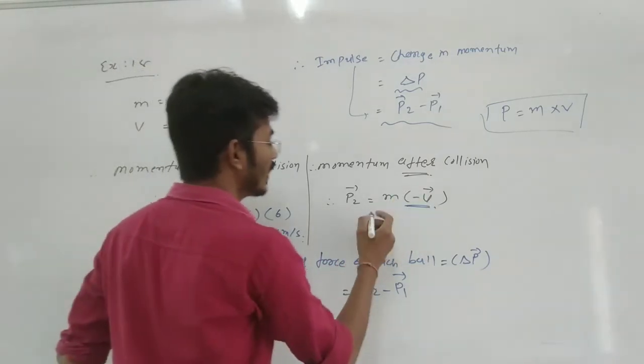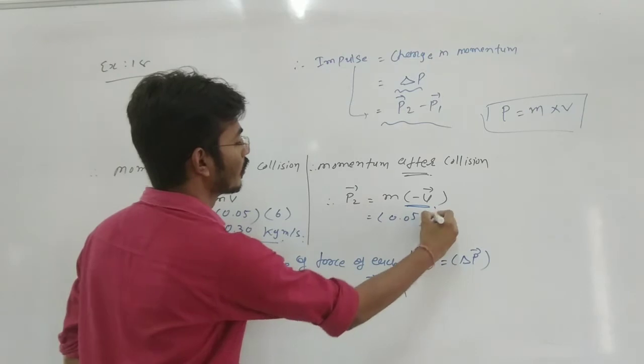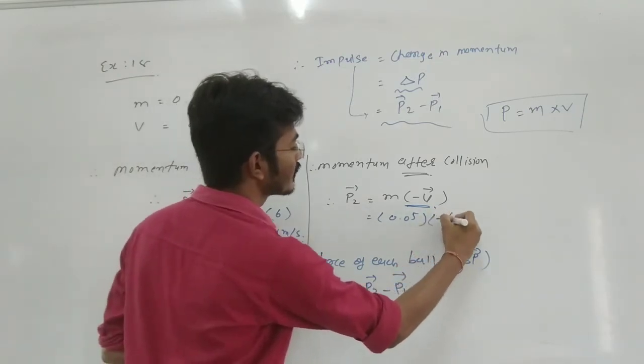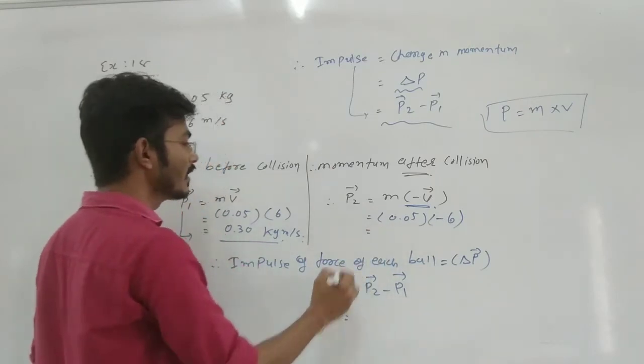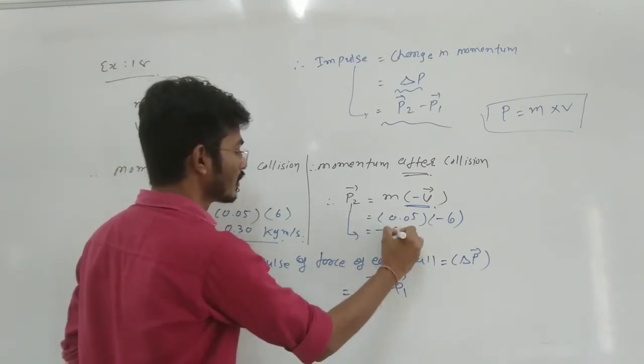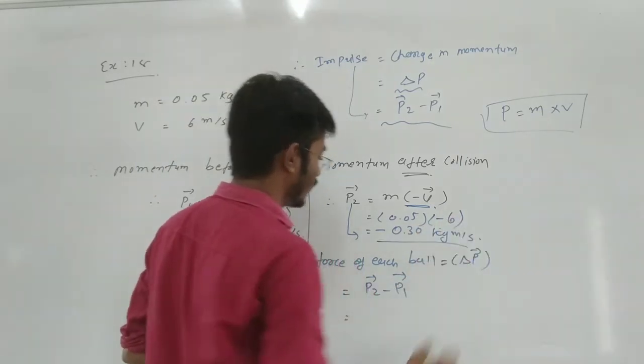So we have to consider minus. And what is the value? 0.05 multiplication of v. But minus we consider. So because of that reason, we have to consider minus 0.30 kg meter per second.